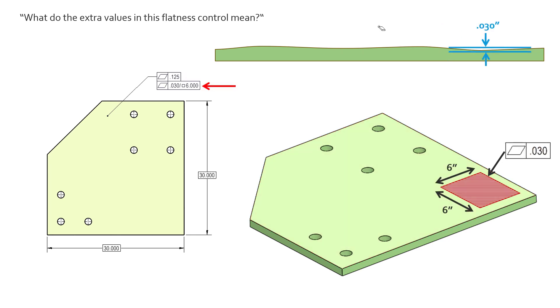But what this bottom feature control frame is doing is further refining that form even tighter yet. What that's specifically telling us is saying you have to hold flatness to 30 thousandths over a square six inches.